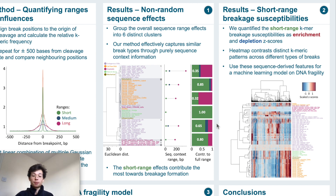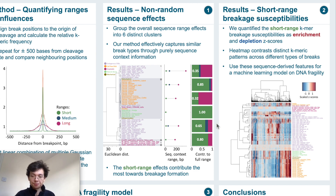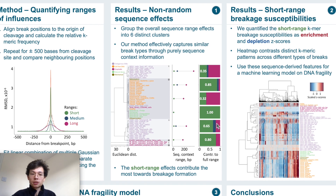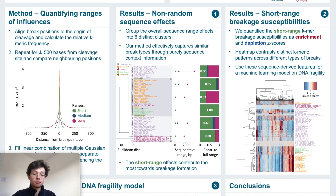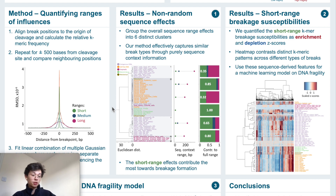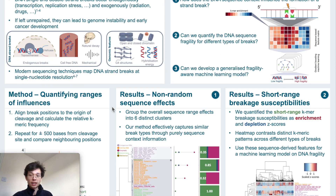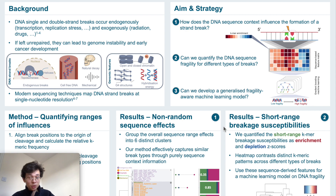At this point, we can quantify the range of influence and which short-range sequences are more or less susceptible to breakage under a given condition. We can now use machine learning to address question number three: can we develop a generalized fragility model? That's what we're striving towards.